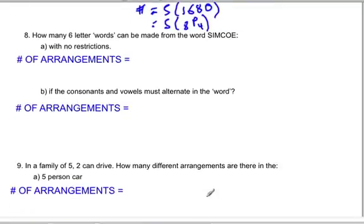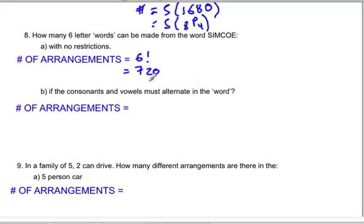How many six-letter arrangements can be made using the word SIMCOE with no restrictions? There are six letters, so it's six factorial, which is 720. For the number of arrangements where letters must alternate consonant and vowel — well, there are three consonants and three vowels.